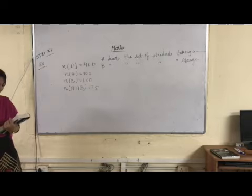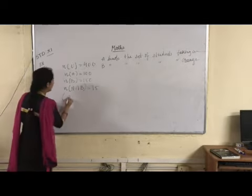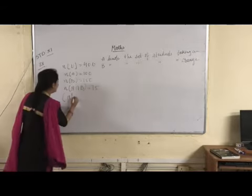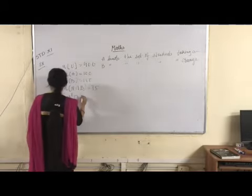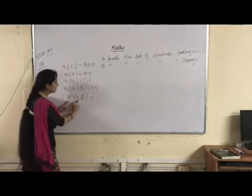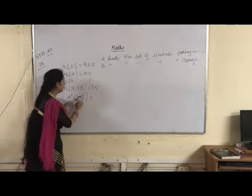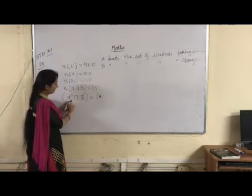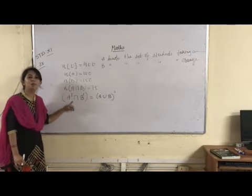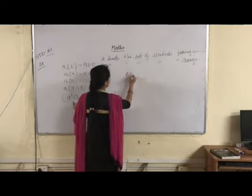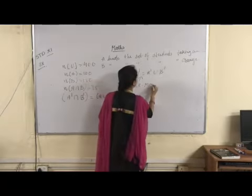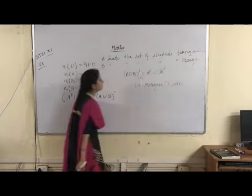We need to find how many students were taking neither apple juice nor orange juice. 'Neither...nor' means the complement of the union: A' intersection B'. By De Morgan's law, A' intersection B' = (A union B)'. Similarly, (A intersection B)' = A' union B'. These are both known as De Morgan's laws. So we need to find N(A union B)' = N(U) − N(A union B).